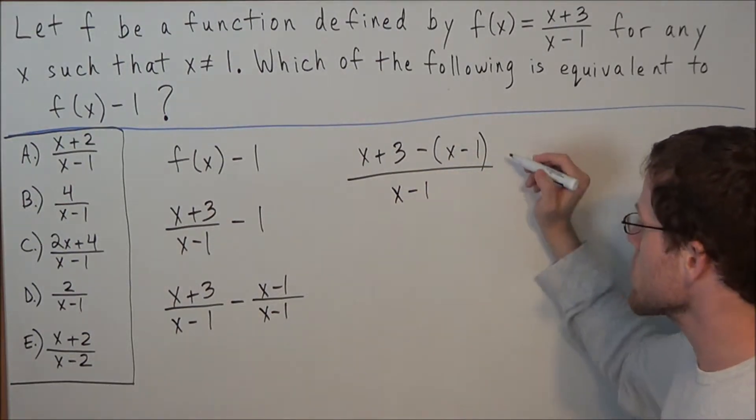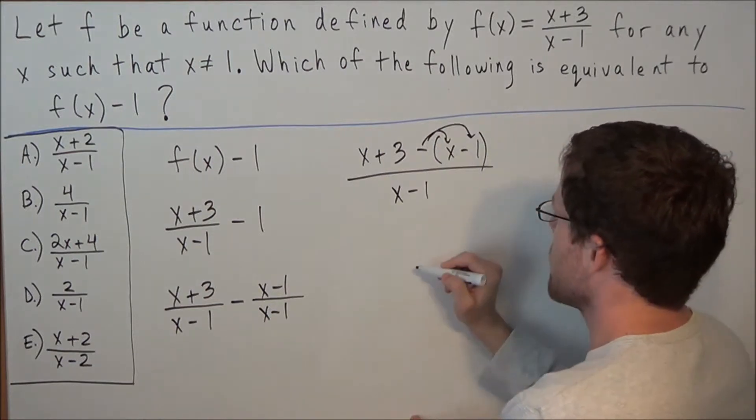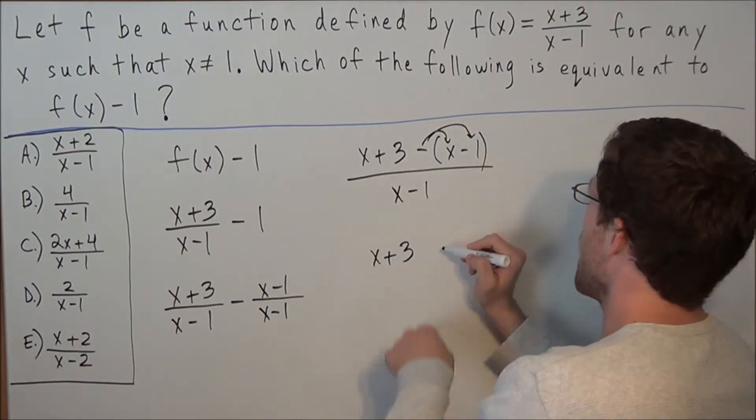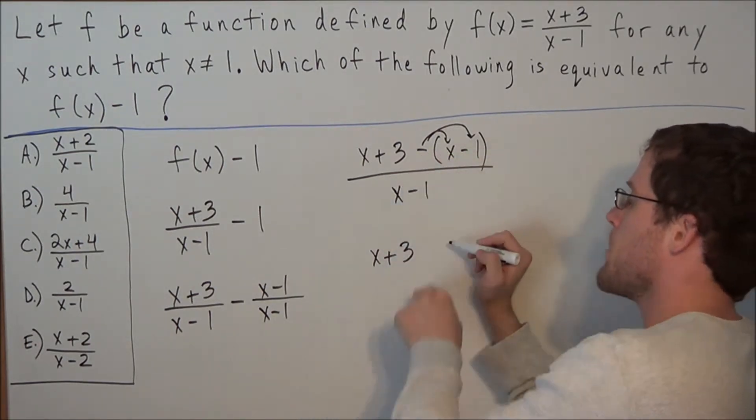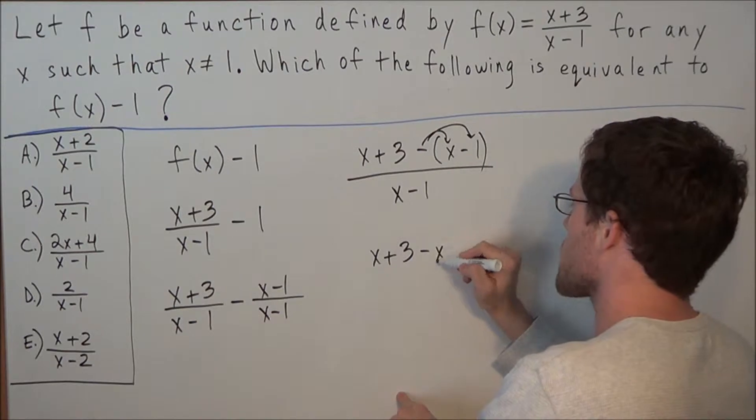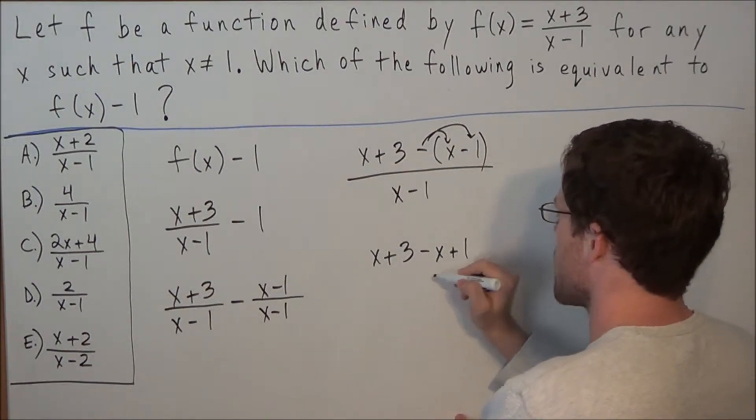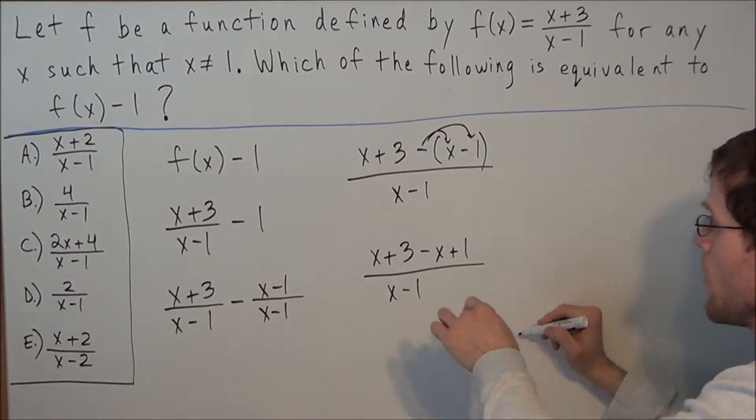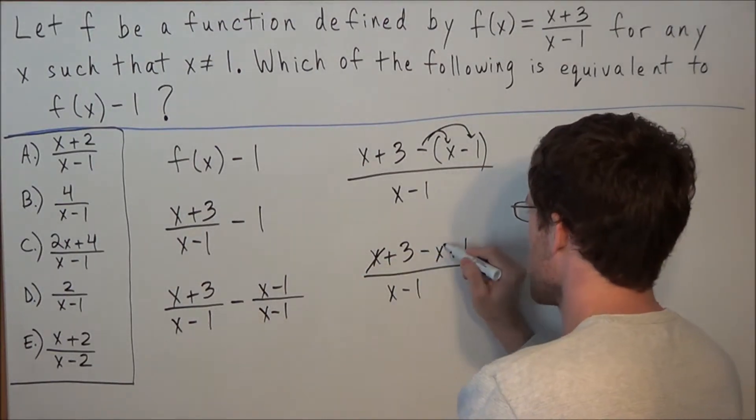Now we can distribute this negative. Our next line will read x plus 3, and now we have minus a positive x. We're going to negate positive x and we get negative x. And now we're going to negate negative 1, and we get positive 1 over x minus 1. So now at this step, x minus x will cancel out.